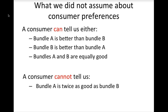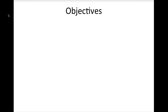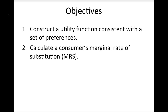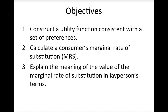Statements like 'bundle A is twice as good as bundle B' are meaningless in our model of preferences. Now that we have our basic model of preferences, we are going to introduce a mathematical convention that will help us to distinguish bundles of goods from each other. This convention is called a utility function. By the end of this lesson, you should be able to do the following things.